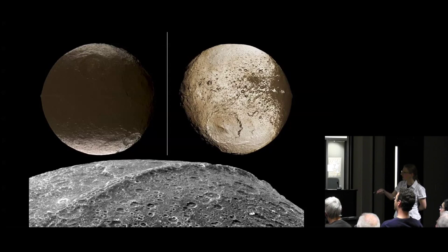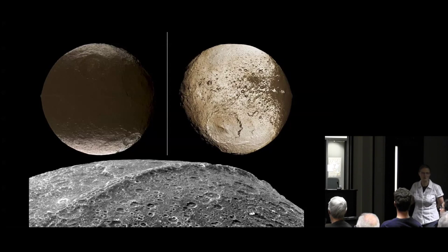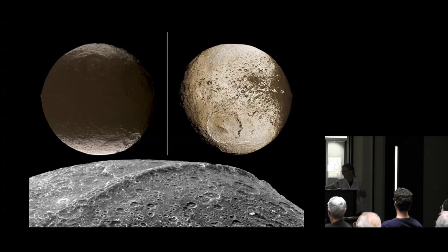Iapetus has another interesting feature, which is this equatorial ridge. It's right on the equator, about 13 kilometers tall. There are a couple of ideas how it formed, but none of them is conclusive. There are ideas that when Iapetus cooled it unevenly cooled and the ridge remained. But then again, why would it be only on the equator? There's another idea that Iapetus used to have a ring system that then rained down and formed this ridge, but none of them is proven.